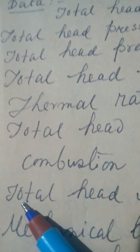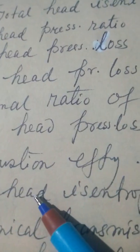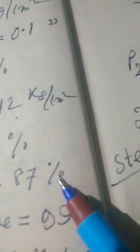Fuel burner, of course. Total head isentropic efficiency of compressor turbine combined 87%.